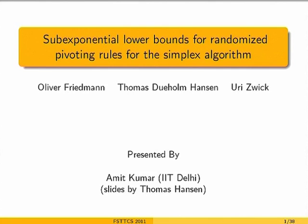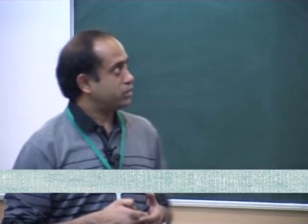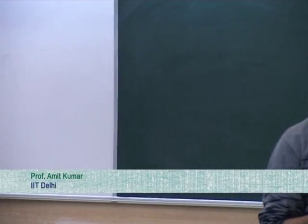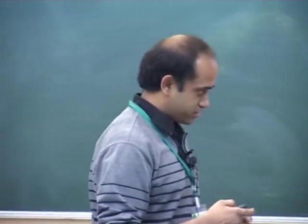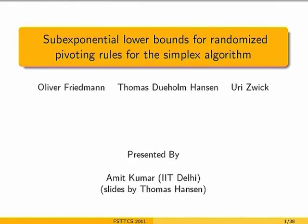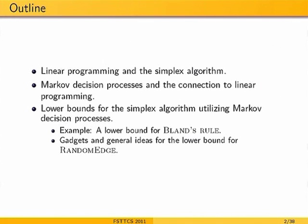I will talk about a very nice result of Oliver Friedman, Thomas Hansen and Uri Zwick on proving lower bounds for the randomized pivoting rule for the simplex algorithm. These slides are by Thomas Hansen and I just made small modifications to them. I will begin by defining what the simplex algorithm is and state the problem. The nice aspect of this paper is that it draws connections to so-called Markov decision processes, and we will see how we use MDPs to derive these lower bounds.